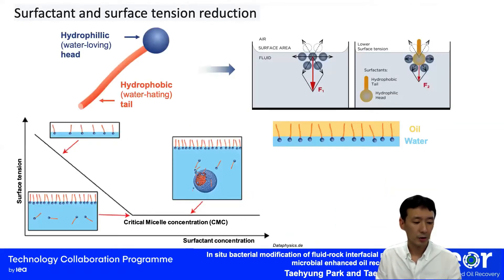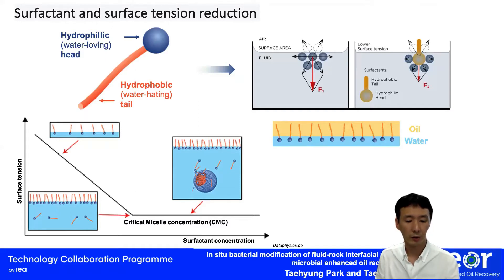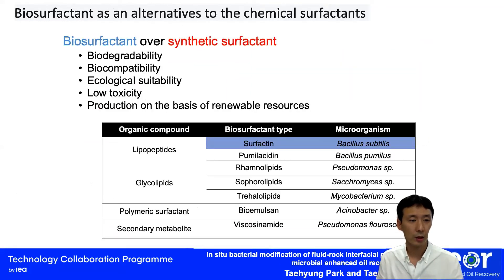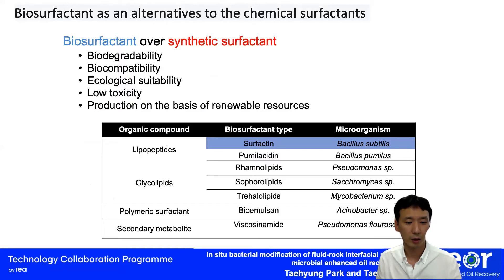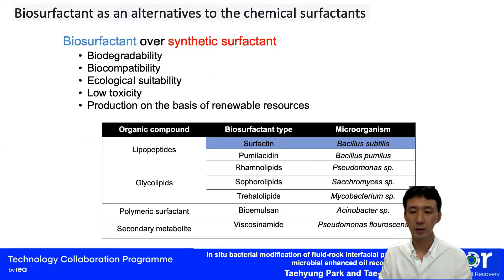The addition of surfactant to the water phase reduces the interfacial tension and alters the solid surface to be more water-wet, which reduces the capillary pressure. As the concentration of the surfactant increases, the IFT decreases until the concentration reaches the critical micelle concentration (CMC). After this critical concentration, further addition of surfactant does not decrease the surface tension or interfacial tension. Meanwhile, biosurfactants are gaining more attention as an alternative to chemical surfactants because of their low toxicity, ecological suitability, and biodegradability. The most well-known biosurfactants are rhamnolipid, produced by Pseudomonas species, and surfactin, produced by Bacillus subtilis.